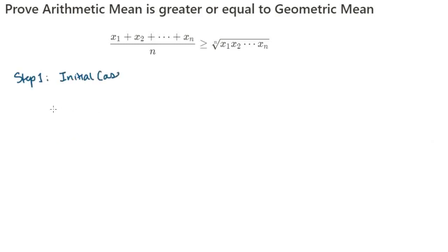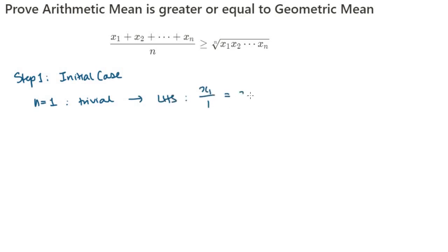If n were equal to 1 — that is, if there is only one number — then it's quite trivial. The left-hand side is equal to x₁/1, which is equal to x₁, which is equal to the first root of x₁, which is also x₁, which is equal to the right-hand side.